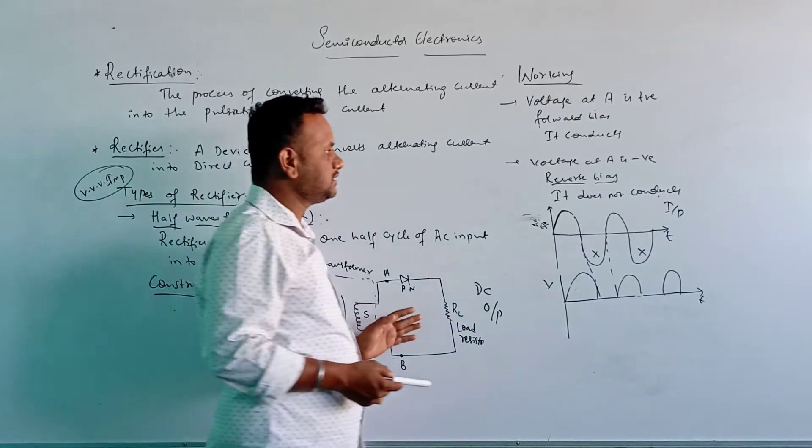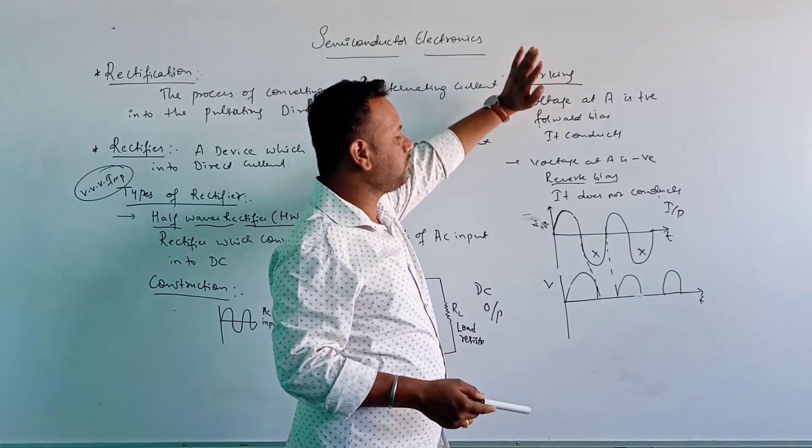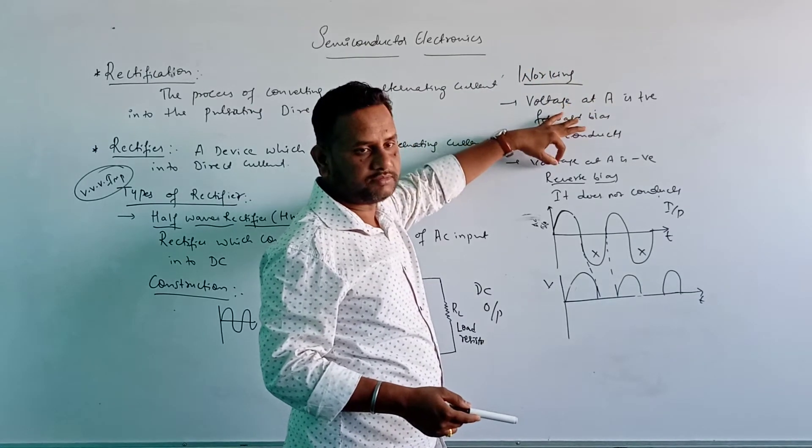So in the next class, you have to remember these two points here. When voltage at A is positive, it becomes forward bias. When voltage at A is negative, it becomes reverse bias.